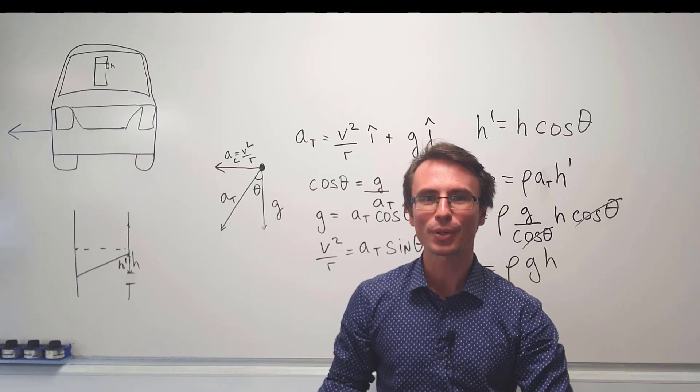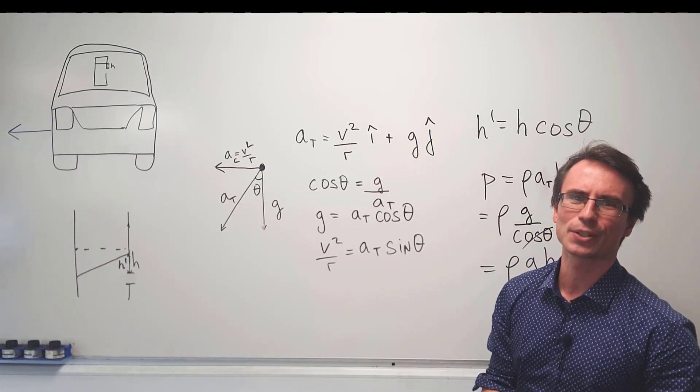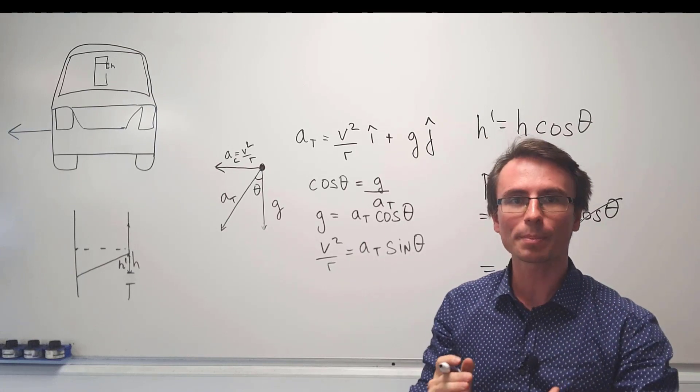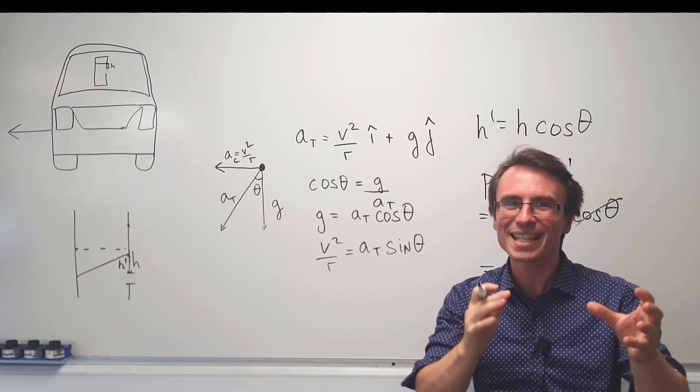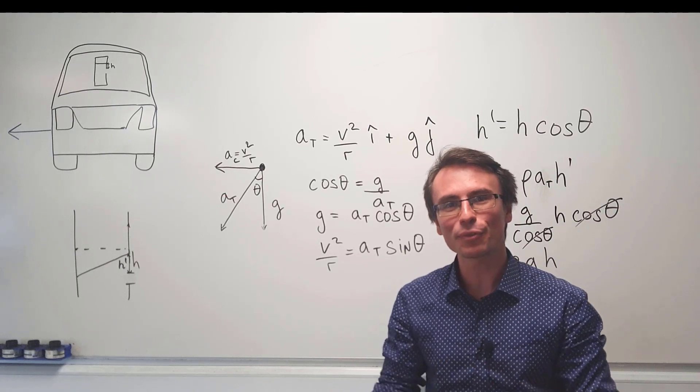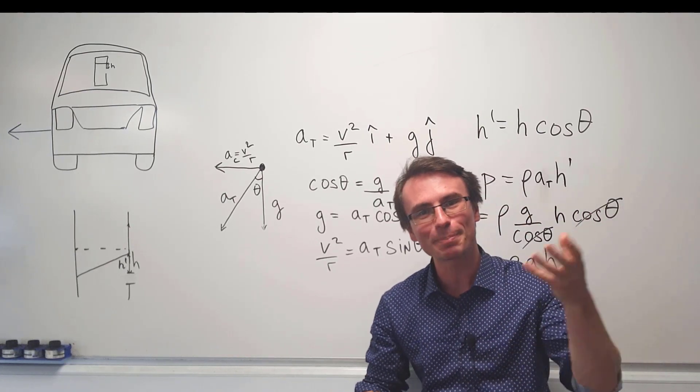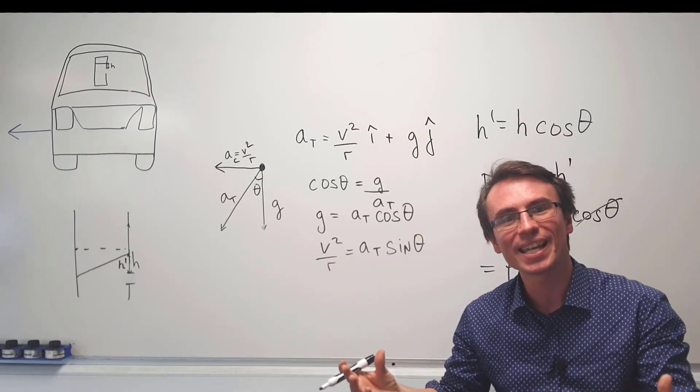But how could we determine the speed from the pressure? Well let's think about potential and kinetic energies. This is essentially Bernoulli's equation which equates the potential and the kinetic energies dealing with the density rho. Now to get the speed of the fluid we need to use Bernoulli's equation which essentially just equates potential and kinetic energy.